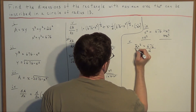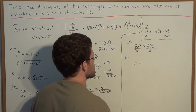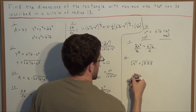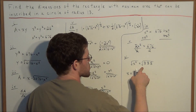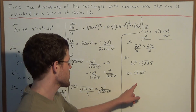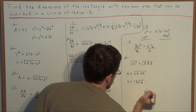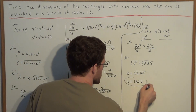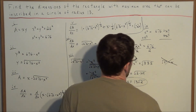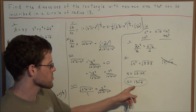Dividing by 2 gives us x squared equals 338. Taking the square root of both sides, we get x equals the square root of 338. We can write 338 as 2 times 169, so x equals 13 radical 2, since the square root of 169 is 13. Because we're talking about distance — the length of a side of a rectangle — we reject the negative solution, so x equals 13 radical 2.